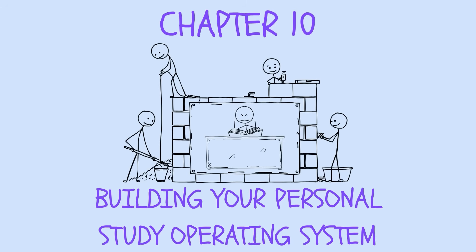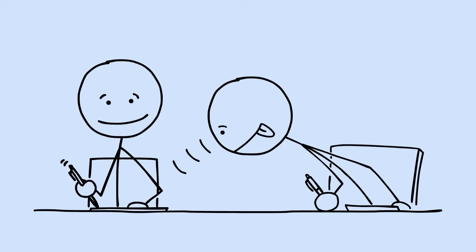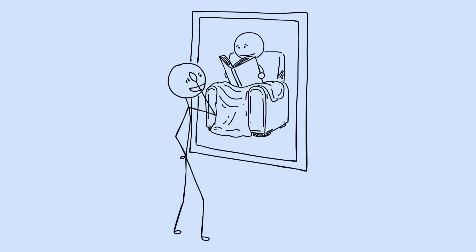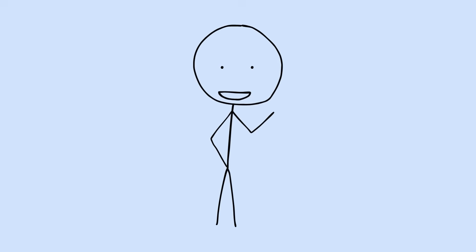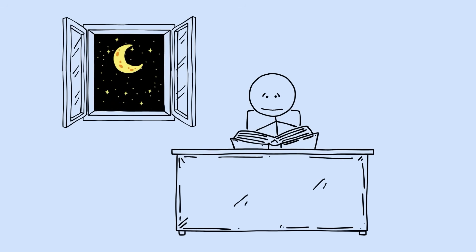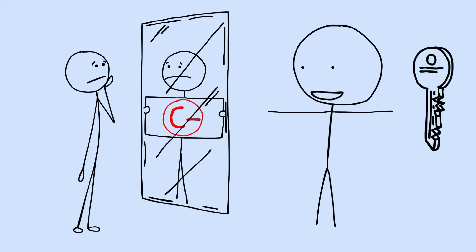Chapter 10. Building your personal study operating system. Your brain is as unique as your Netflix recommendations. So why would you use someone else's study system? This is where everything comes together. You've learned the techniques that work. Now you need to build a system that works for you. Some people are morning learners. Others think more clearly at midnight. Some need complete silence. Others focus better with background noise. The key is honest self-assessment, not following trends.